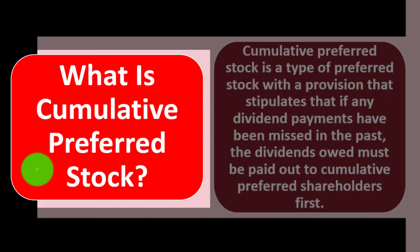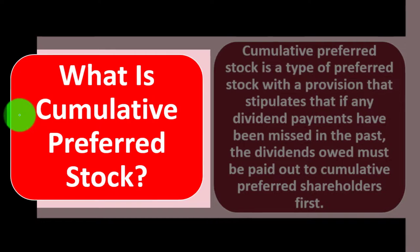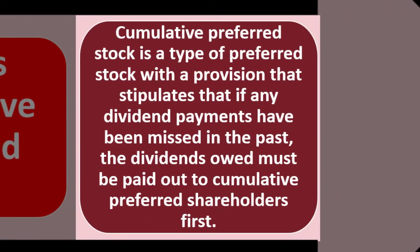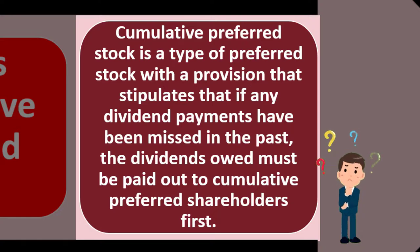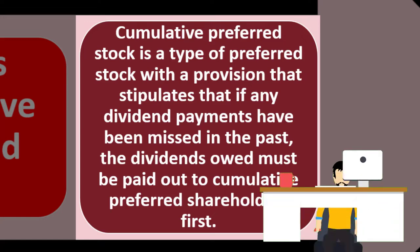Preferred stock is also preferred in that if the company were to liquidate, go out of business, or go bankrupt, preferred stockholders get paid before common stockholders — although after bondholders typically. That's kind of why it's in the middle. Now we're adding the component of 'cumulative.' Cumulative preferred stock is a type of preferred stock with a provision that stipulates that if any dividend payments have been missed in the past, the dividends owed must be paid out to cumulative preferred shareholders first.